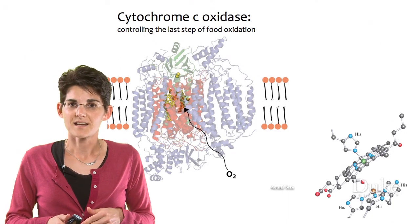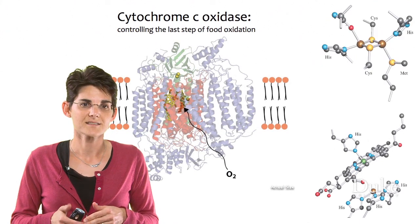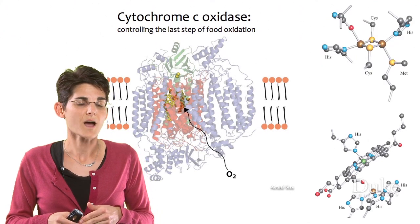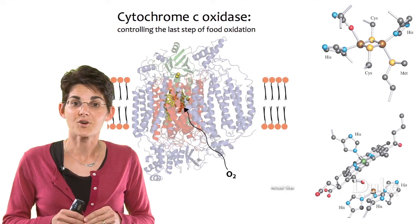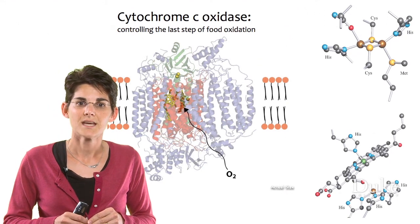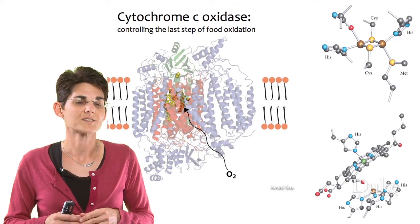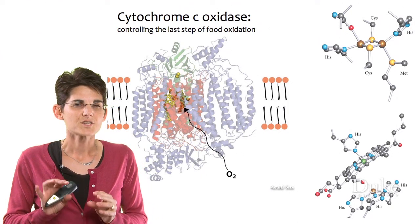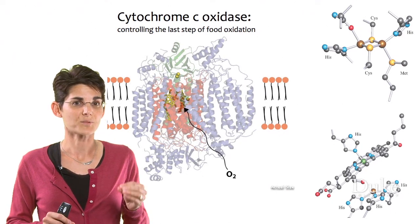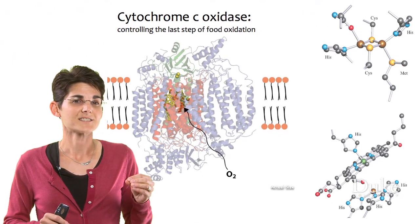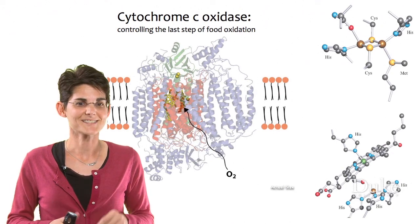There's another inorganic site — another metal cofactor on cytochrome C oxidase — and that's a two-copper center up here. Those brown, bronze, or copper-colored spheres are the two coppers, and again, it has amino acid side chains that hold that copper center into place. So here are just two small examples of metallic cofactors found in a protein that's involved in an essential life process that's not organic, but it is living.